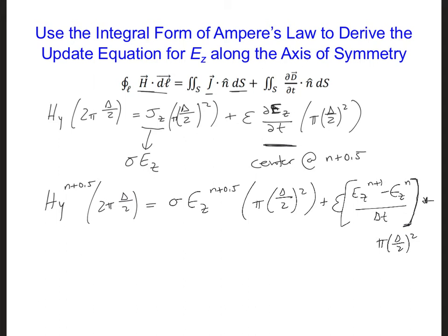Now again, as we've seen before, the EZs, we don't have those at half integer time steps. So instead of this, we're going to approximate it as EZ n plus 1 plus EZ n and divide by 2.